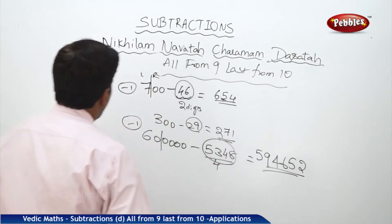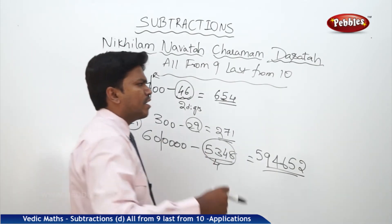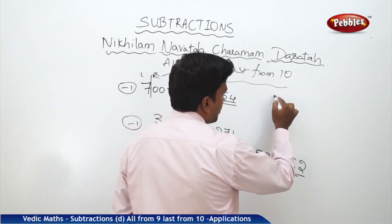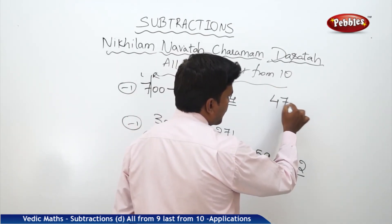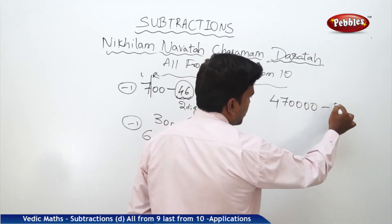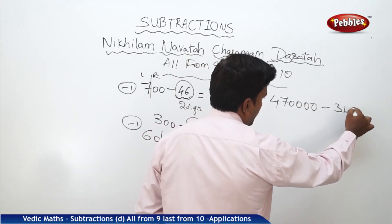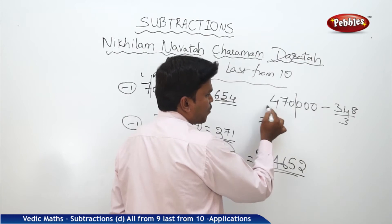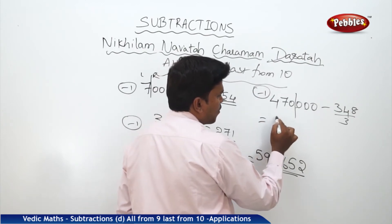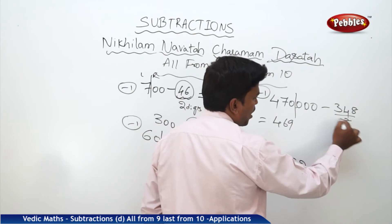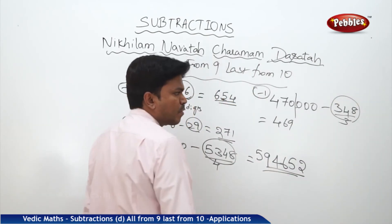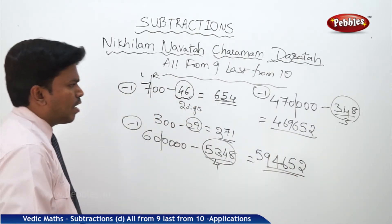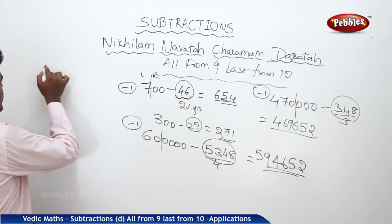Step by step in an easy and simple manner: one more example — 4,700,000 minus 348. How many digits? Three. Make a partition 1, 2, 3. The left part is 4700 — minus 1 is 4699. To get the remaining answer, apply 'all from 9, last from 10' to 348: you get 6, 5, 2. So the answer is 4,699,652.